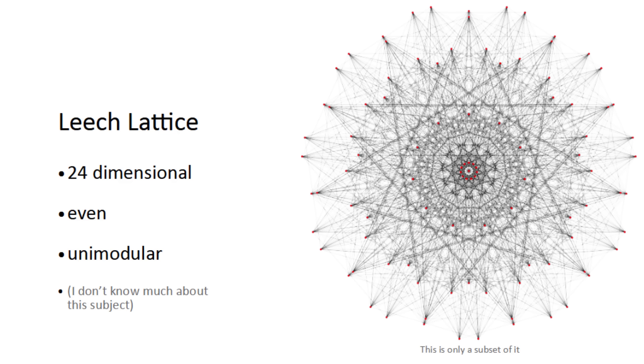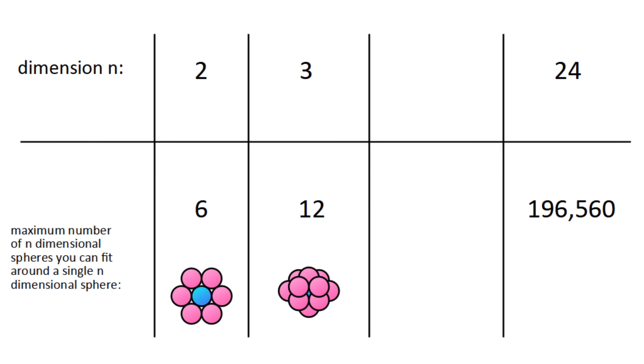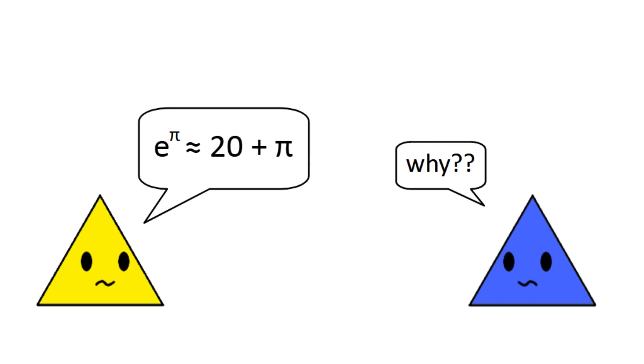The existence of this lattice is why we know that 196,560 is the maximum number of 24-dimensional hyperspheres you can fit around a single 24-dimensional hypersphere, even though this problem is unsolved for dimensions 9 to 23. I think this result goes to show the value of mathematical curiosity, because you never know where it might lead you.